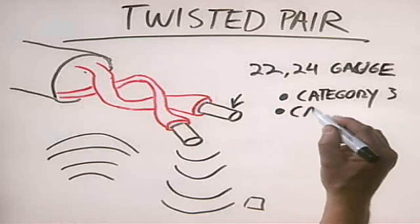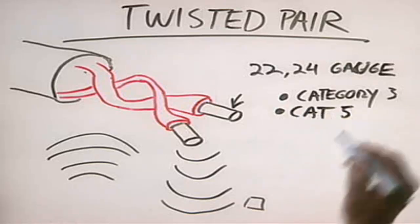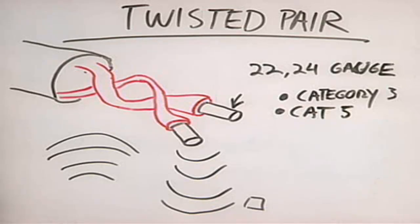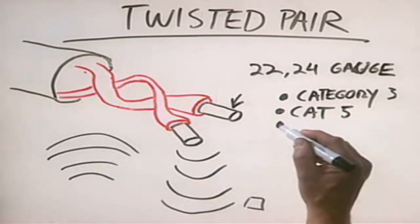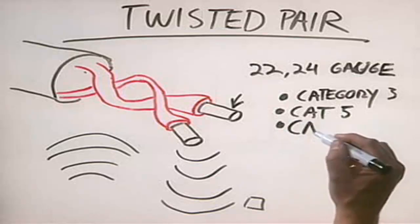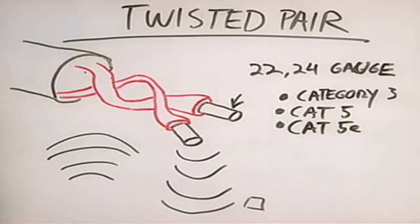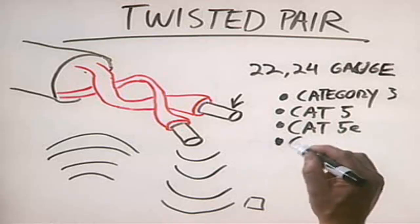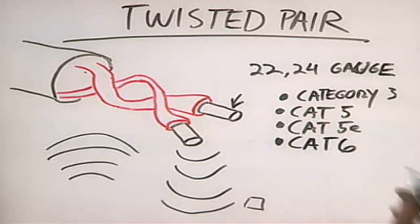Instead, what we use a lot of is called Category 5, or CAT 5. CAT 5 supports network speeds of 100 or 1,000 megabits per second and has been very widely implemented. There's a newer version called CAT 5e, an enhanced version of CAT 5 that offers better crosstalk protection and can support speeds up to 10,000 megabits per second. Finally, there's CAT 6, a special form of twisted pair designed specifically for fast broadband communications.